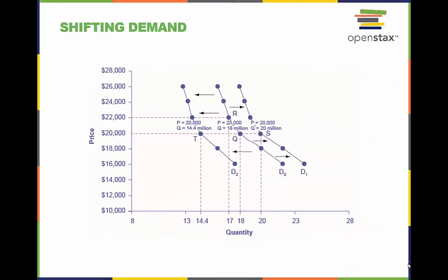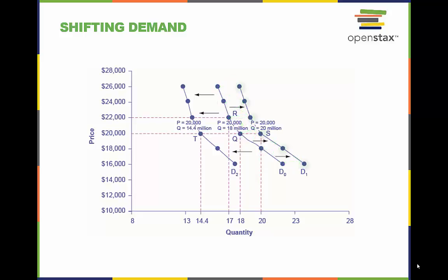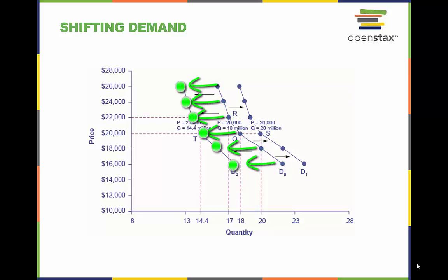Increased demand means that at every given price, the quantity demanded is higher, so that the demand curve shifts to the right from D0 to D1. Decreased demand means that at every given price, the quantity demanded is lower, so that the demand curve shifts to the left from D0 to D2.